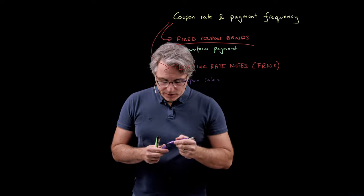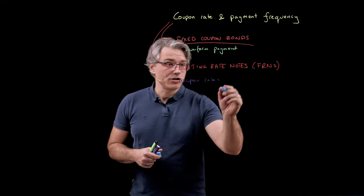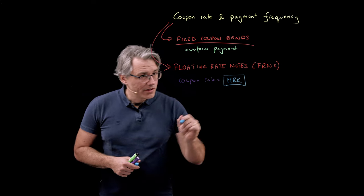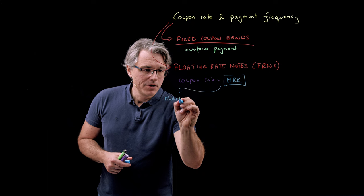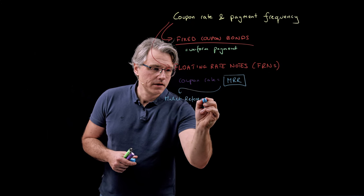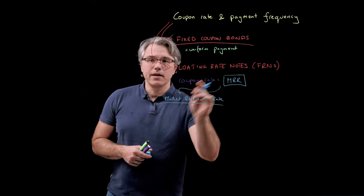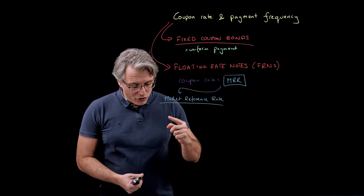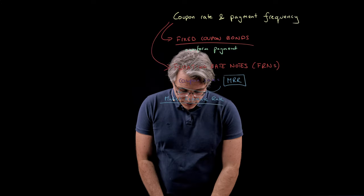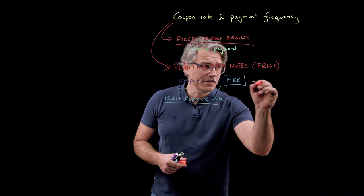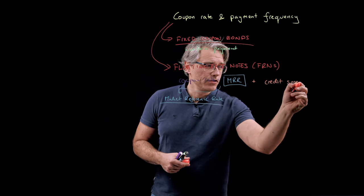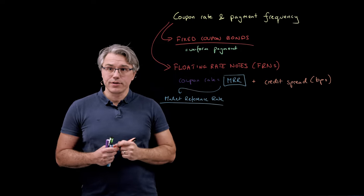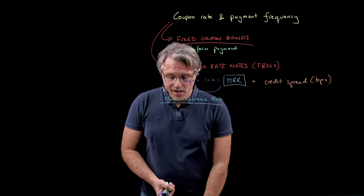The essential thing to appreciate is that we'll need a certain benchmark called the MRR — the market reference rate. Get used to seeing this in the curriculum and possibly in exam questions. On top of the MRR, we also add an additional component called the credit spread, which will typically be provided in basis points. In a moment we'll do a question together that addresses these concepts with a proper computation.